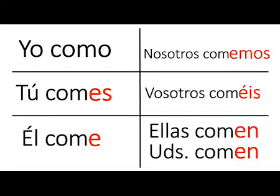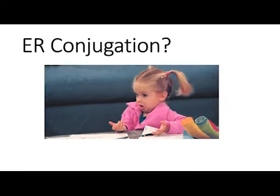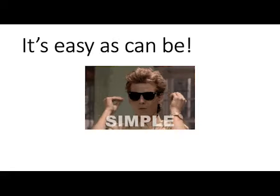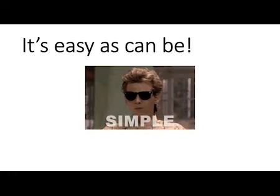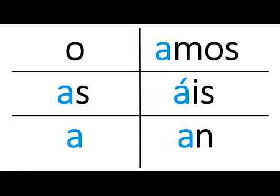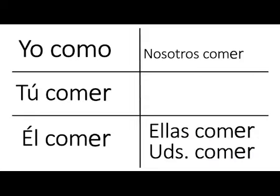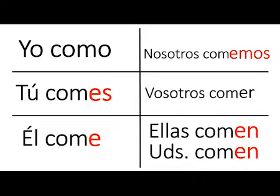Now you give it a try. I'll sing it, and then you sing it back to me. Here we go. ER conjugation, it's easy as can be, all you gotta do is switch the A out for an E. Like nosotros comemos, tú comes, él come, ellas comen, ustedes comen. I could do this all day.